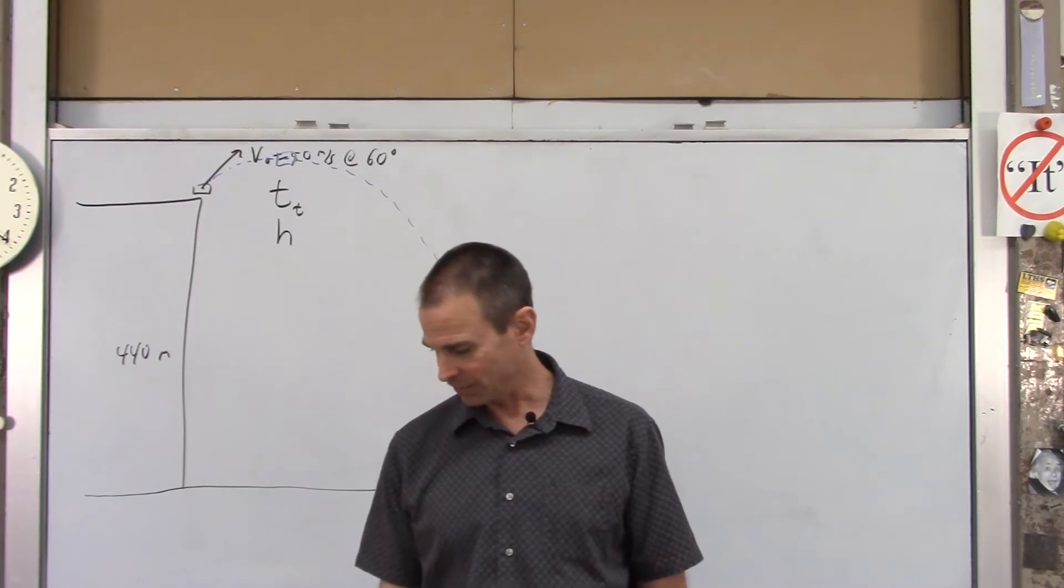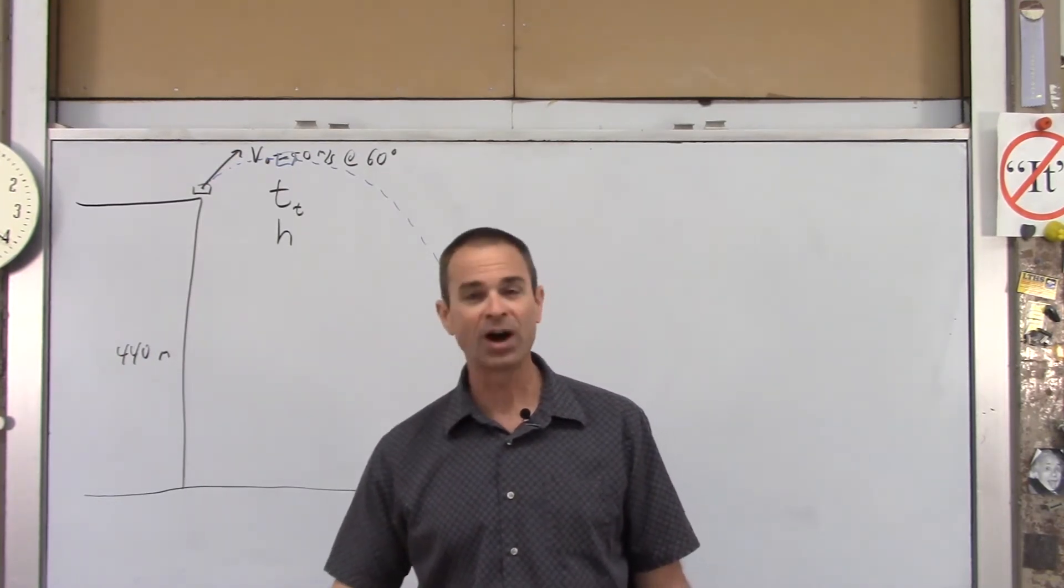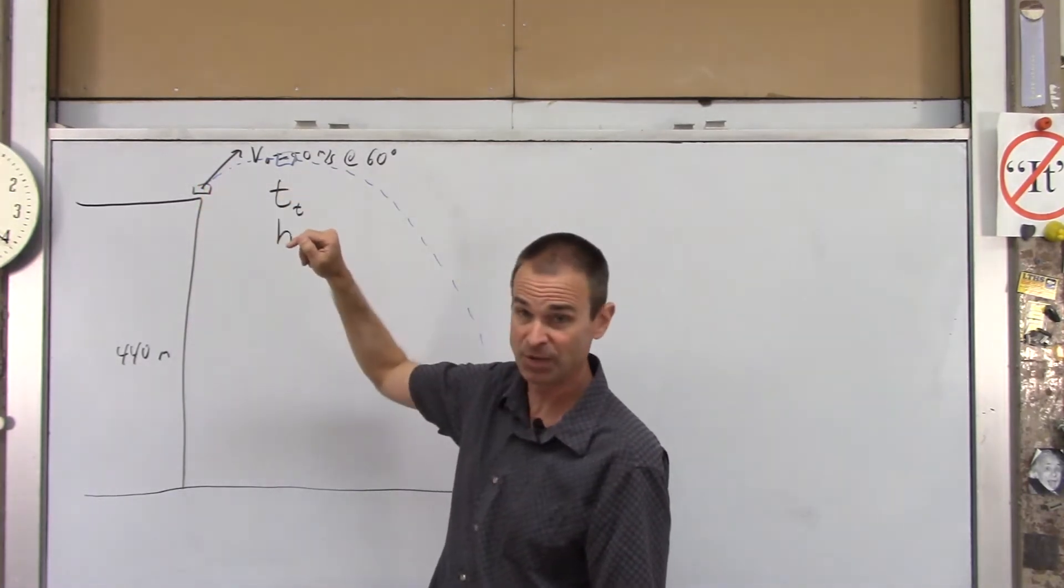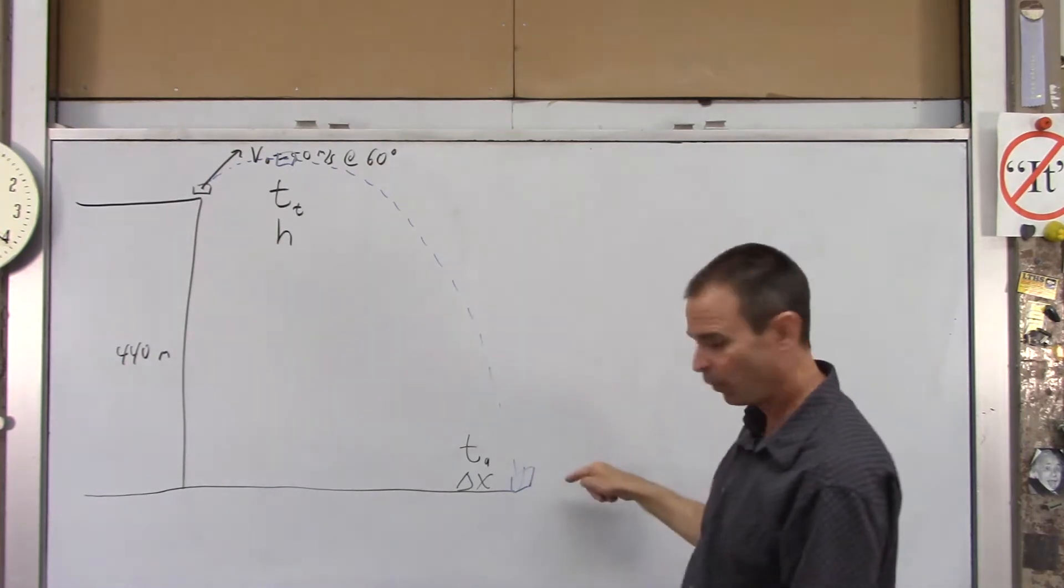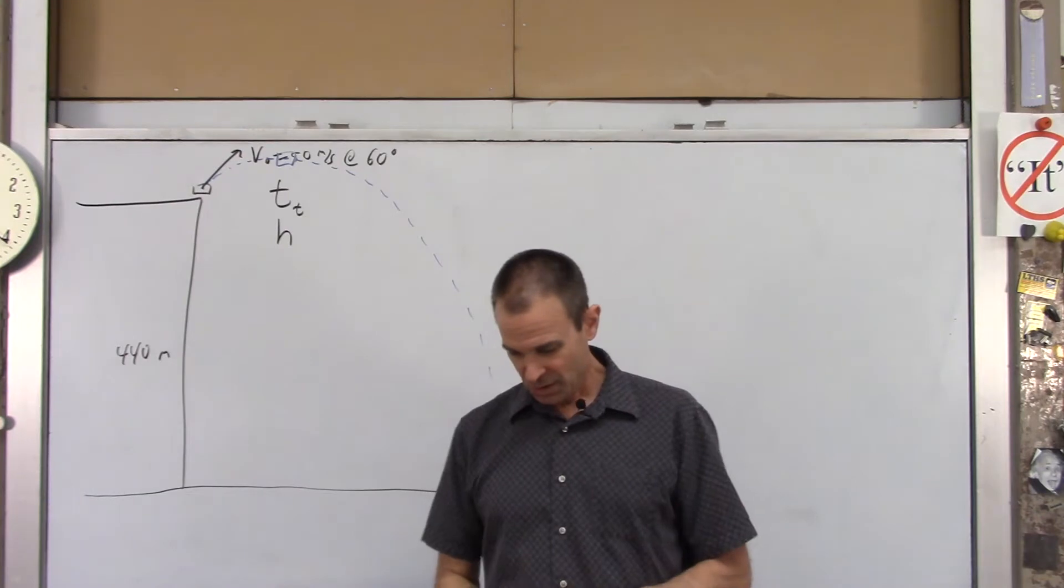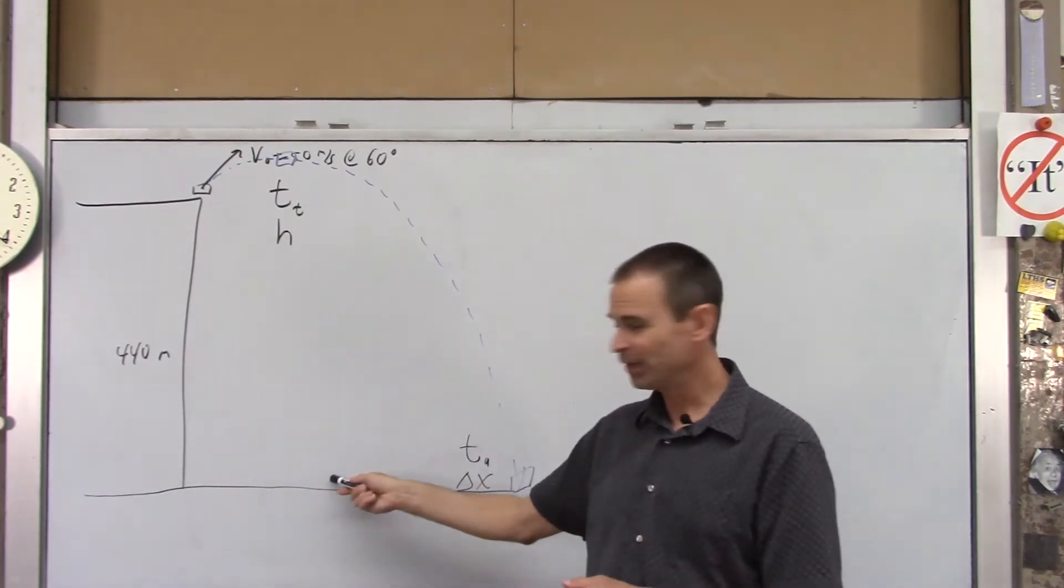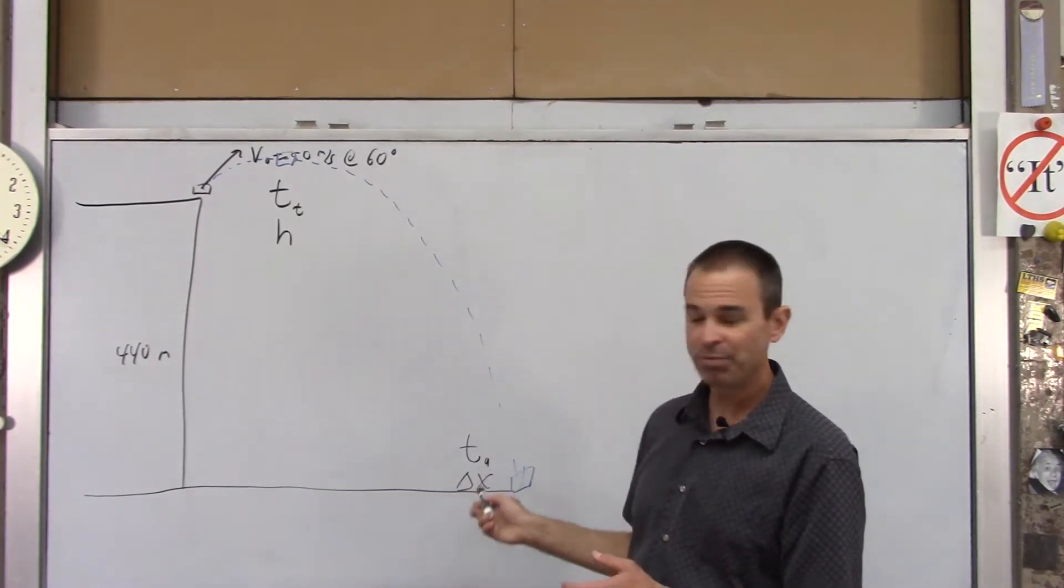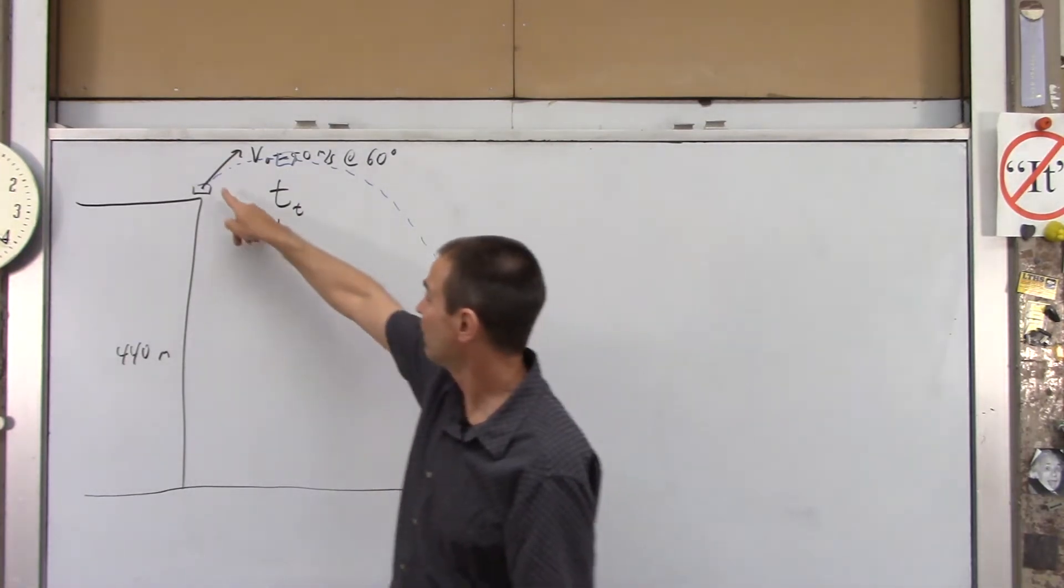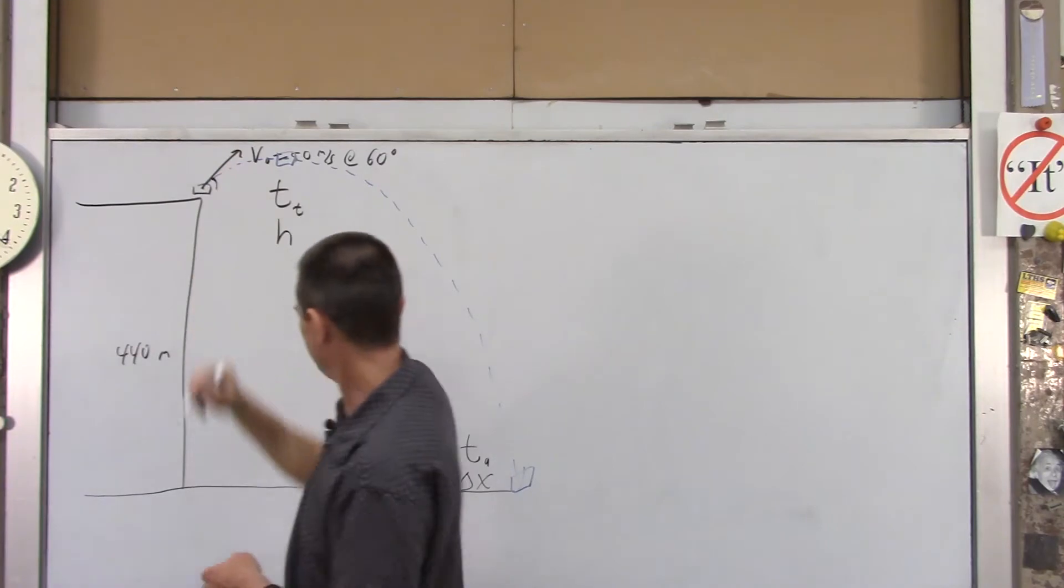Now, by the way, if you did watch the last problem, the book landed about 474 meters away. So the last problem, we launched this thing horizontal, same speed, 50 meters per second, and the book landed 474 meters away. So now the question is, where do you think it's going to land now? Do you think it's going to land closer to the building, the same place it landed before, or further from the building? And again, I'll make a note, we are launching this thing at 60 degrees.